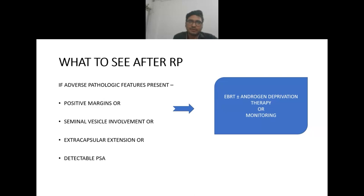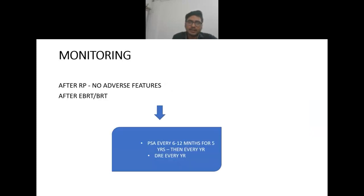For adverse pathological features after radical prostatectomy in very low risk group — positive margins, seminal vesicle involvement, extra-capsular extension, or detectable PSA after radical prostatectomy — we have to go for adjuvant EBRT plus or minus androgen deprivation therapy.